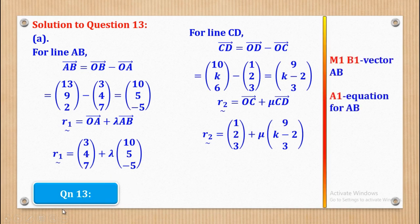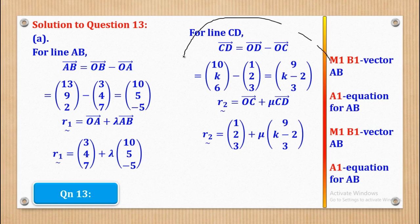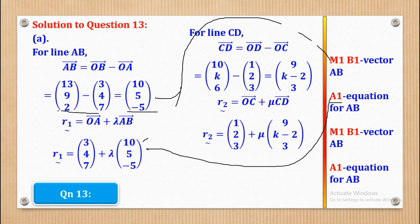Let's see how marks can be awarded. M1 and B1 are for getting the vector equation of AB, with M1 for the subtraction and B1 for the direction vector, and A1 for the full line equation. Similarly, M1 for the subtraction for CD, B1 for the direction vector output, and A1 for the complete equation. That's how the 6 marks come about in that part.